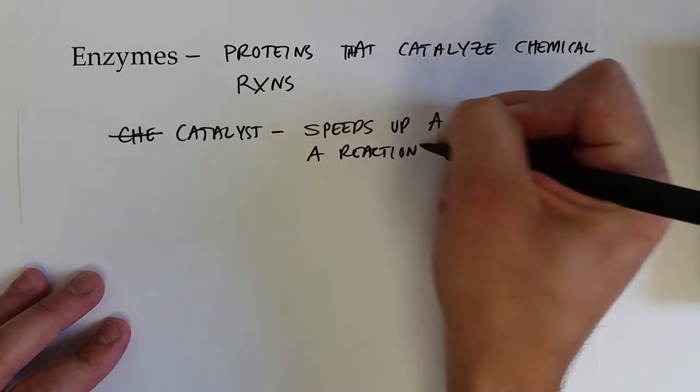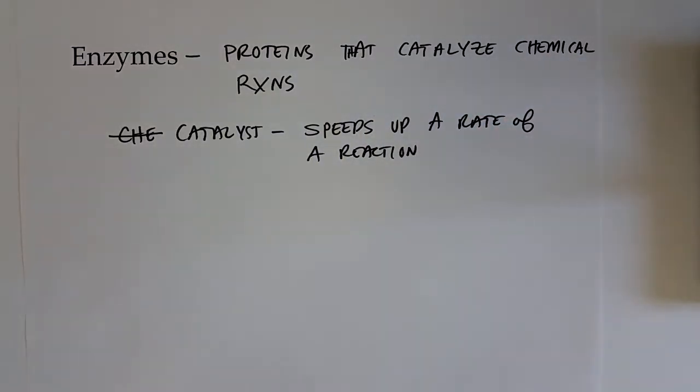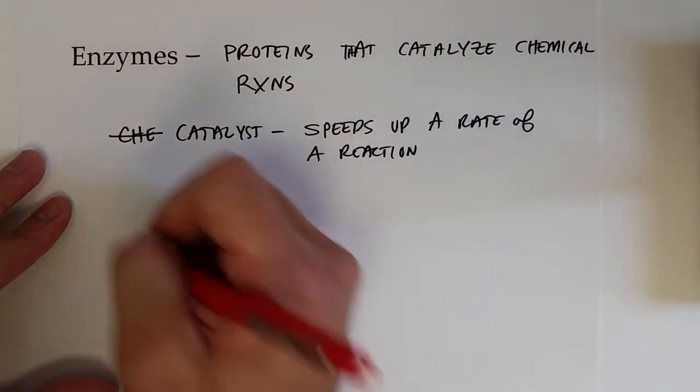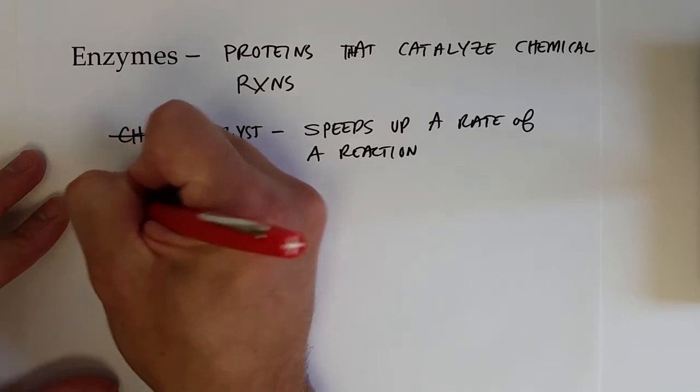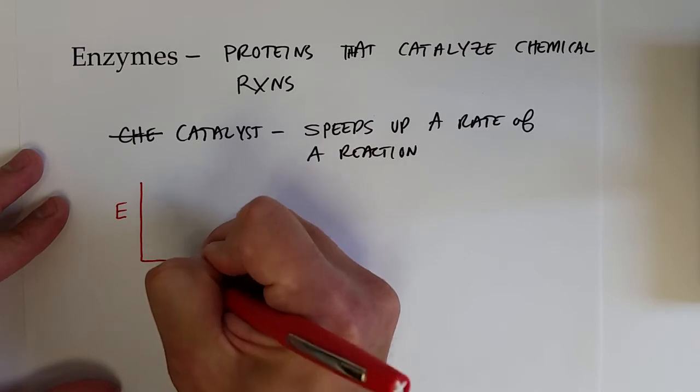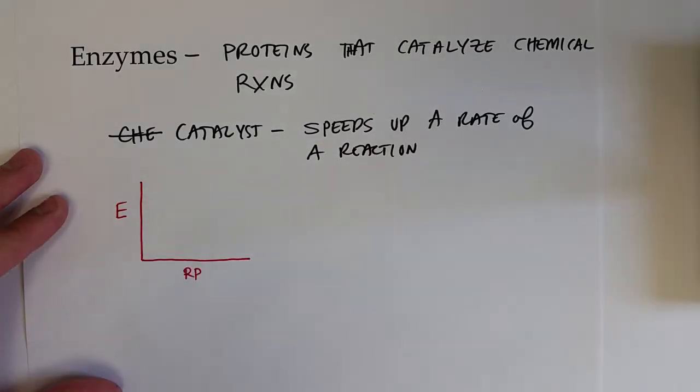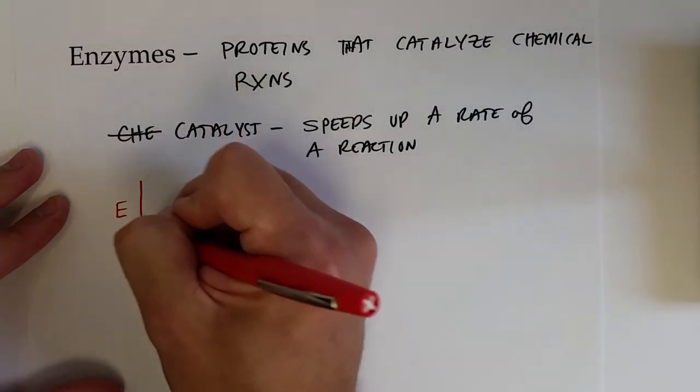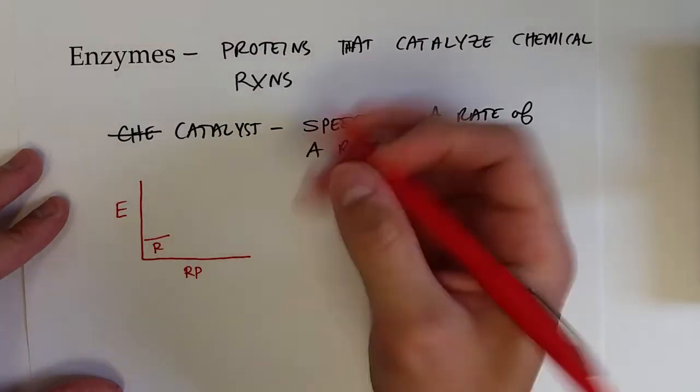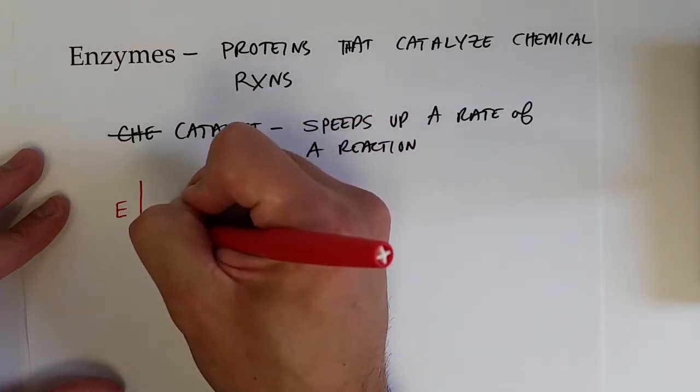Reactants are turned into products more quickly. They do so by lowering the activation energy of the reaction. If we plotted the potential energy of the reactants and products as a function of time or reaction progress, the reactants would start out at some point higher or lower energy than the products, and then eventually they turn into the products.